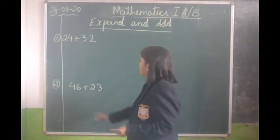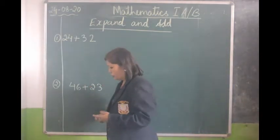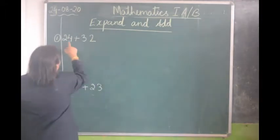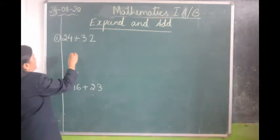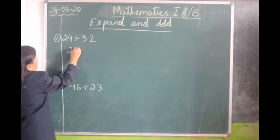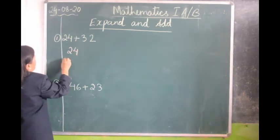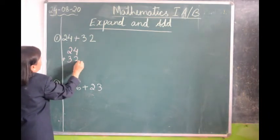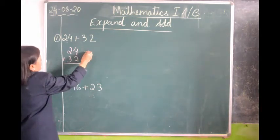For example, 24 plus 32. We will write these numbers in vertical line first. 24 plus 32.